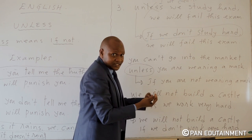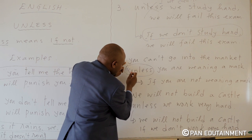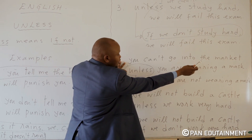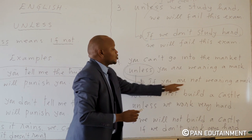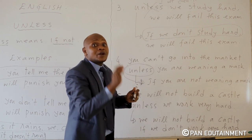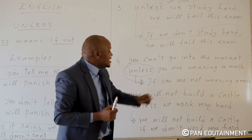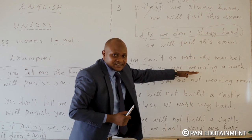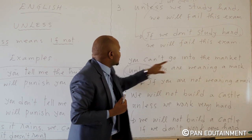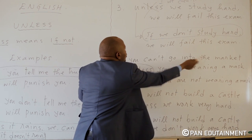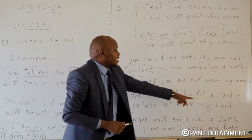Number four: you can't go into the market unless you are wearing a mask. This is like saying: if you are not wearing a mask, you can't go into the market. Unless you are wearing a mask means if you are not wearing a mask — you can't go to the market. Unless equals 'if not' — it is a condition.